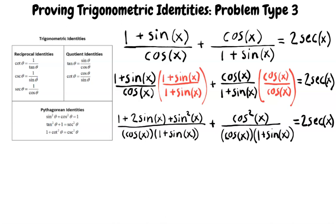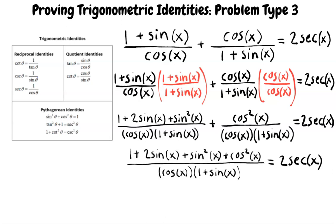That's exactly right. Now that we have two fractions that have the same denominator, we can combine the two into one fraction. Our resulting fraction is now 1 plus 2 sine of x plus sine squared of x plus cosine squared of x over cosine of x times 1 plus sine of x.